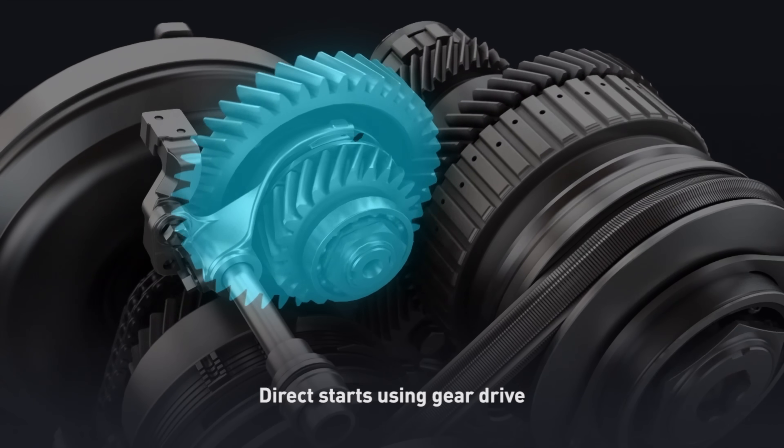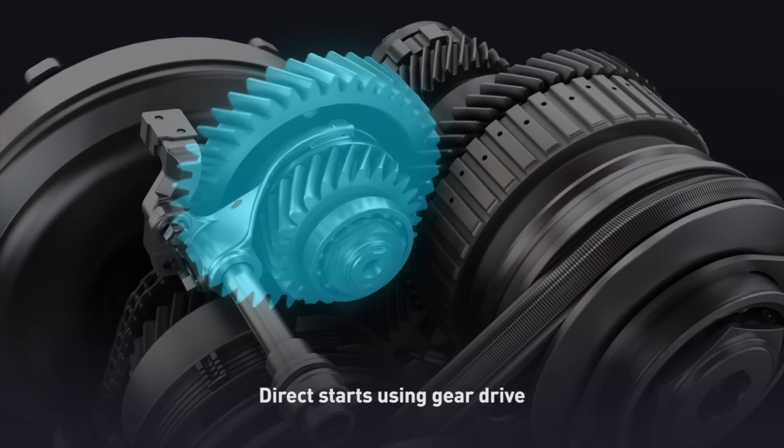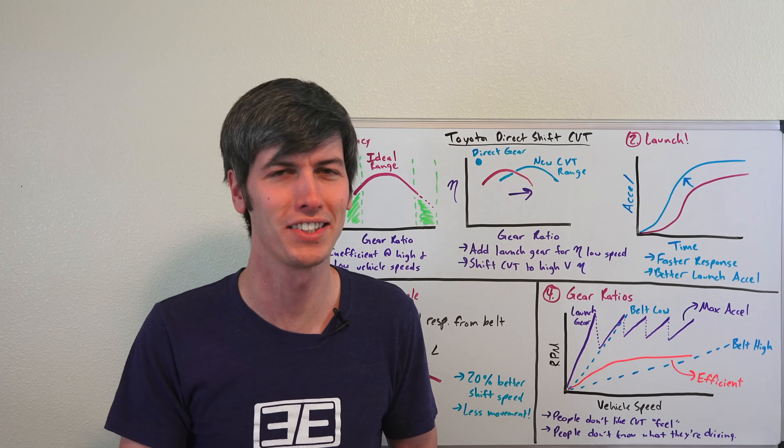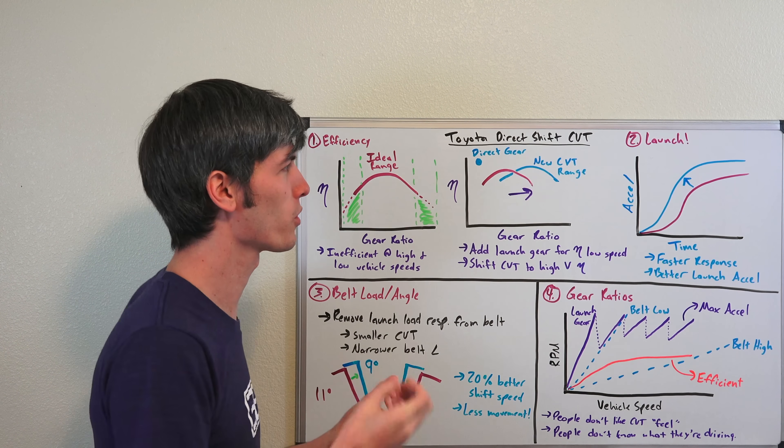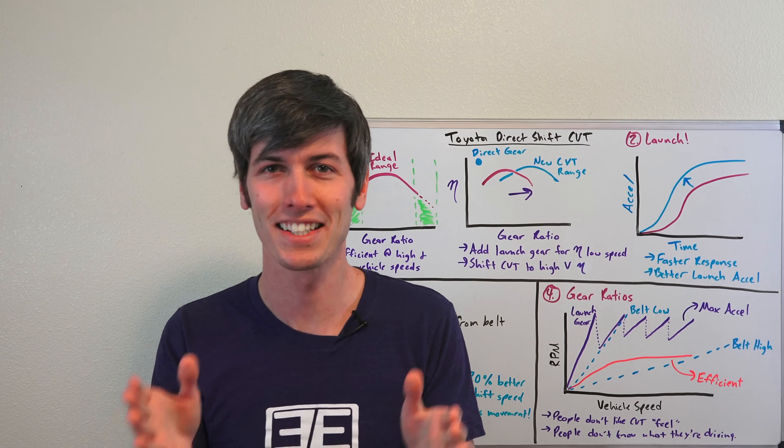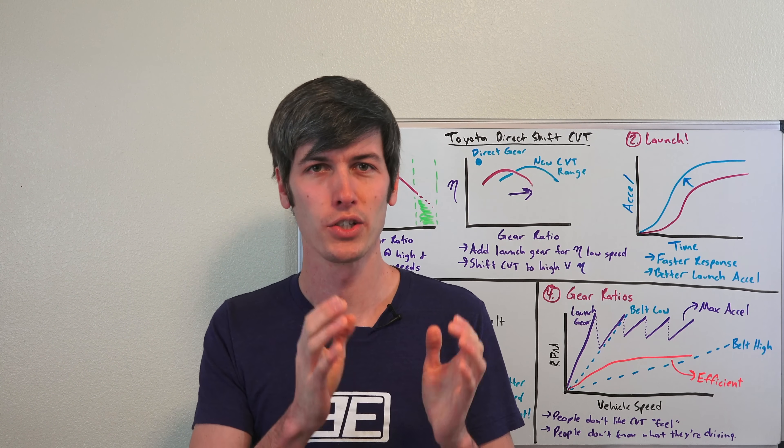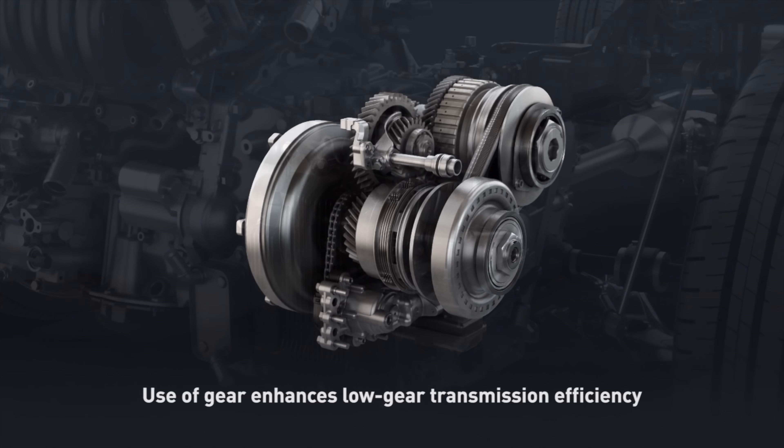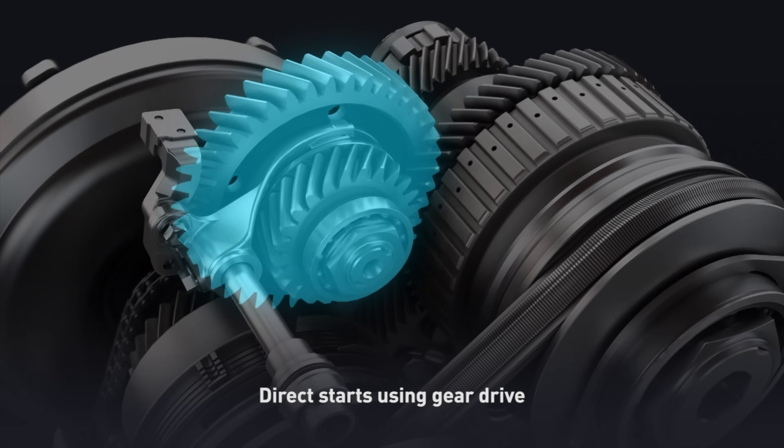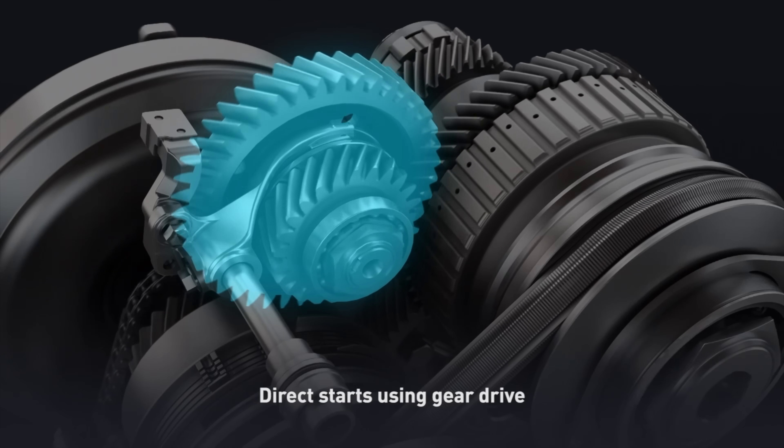A CVT with a launch gear. Was it for the performance-oriented folks that also like CVTs? Not exactly. So in this video I'm going to be talking about Toyota's Direct Shift CVT, which is a CVT that does have a specific gear just for accelerating from a stop, but it's not for performance reasons like it may sound. Instead, it is for efficiency.